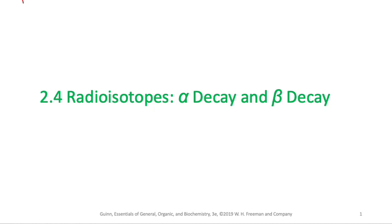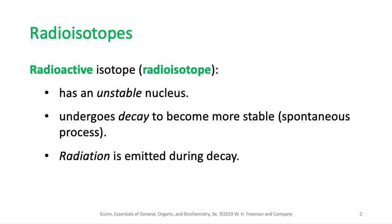Now we're going to talk about a special term called radioisotopes, and then we're going to talk about what alpha and beta decay are. Let's get started with this new topic called radioisotopes.